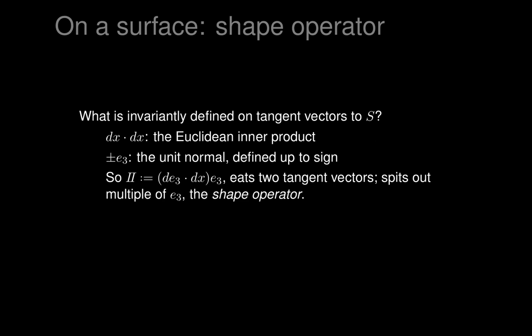This expression will eat two tangent vectors, because it has a DE3 and a DX - those are differentials, so they have to be fed tangent vectors to have numeric values. You plug in two tangent vectors, you get a numeric value for DE3 dot DX, and then you multiply it by E3, so it spits out a multiple of E3. This is the shape operator: it's defined as an operator eating pairs of tangent vectors to the surface and spitting out a normal vector to the surface.